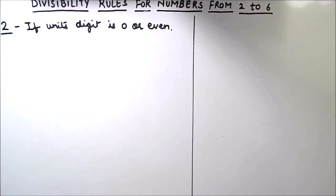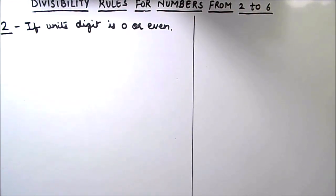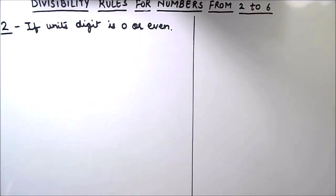The divisibility rule for number 2 is very easy. If the unit's digit in the given number is 0 or if it is even, then the number is divisible by 2.